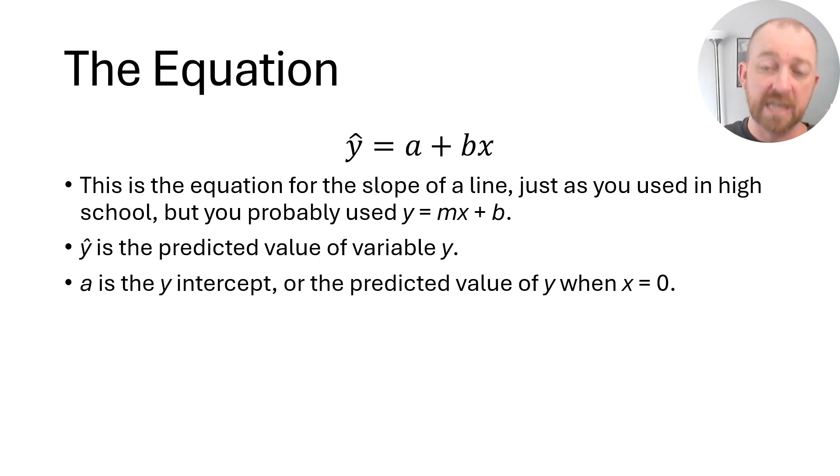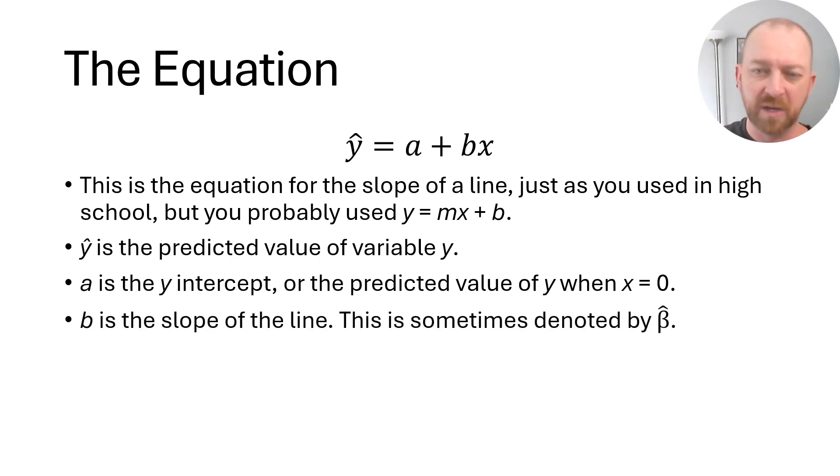A becomes the intercept. In other words, it's the Y intercept or where the line will cross that Y axis. You could also think of it as the value of the Y variable, or our predicted value of the Y variable, if X is equal to zero. We're going to go over an example in the next video where this should make a lot more sense. I'm just explaining these basic ideas here.